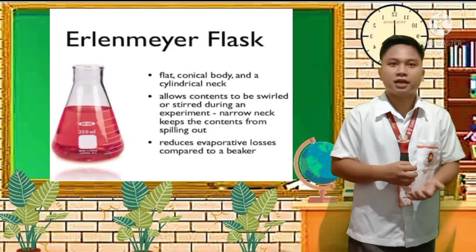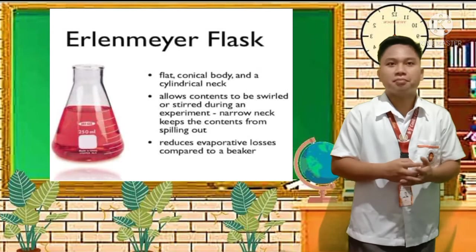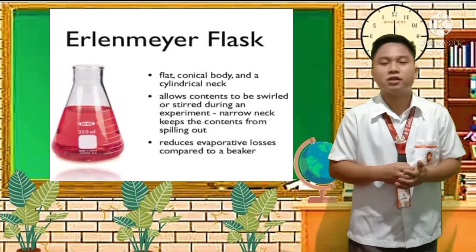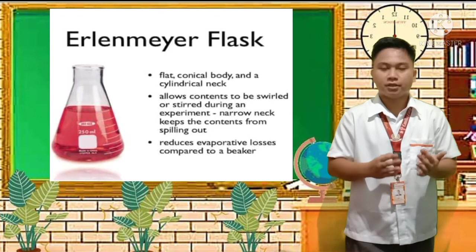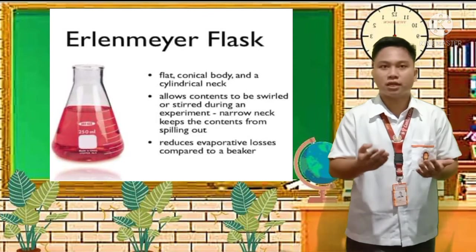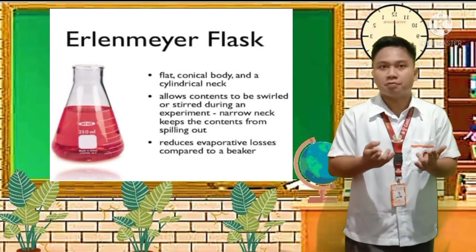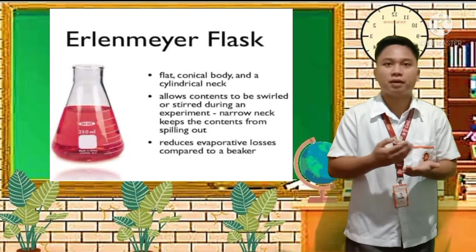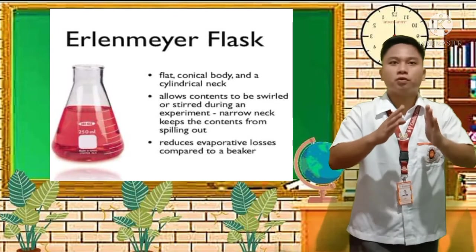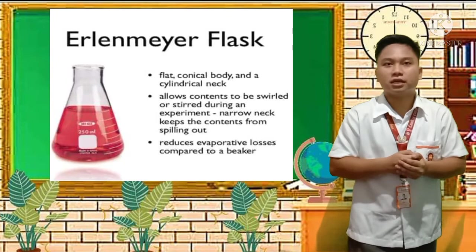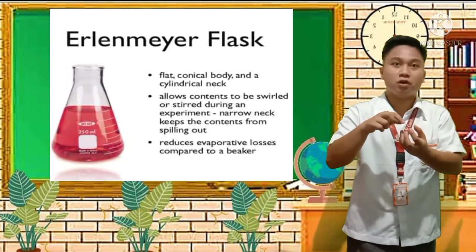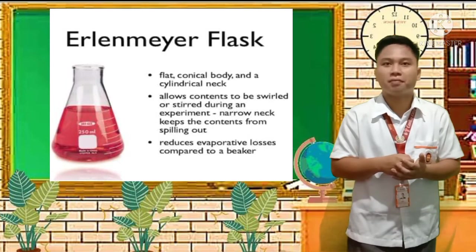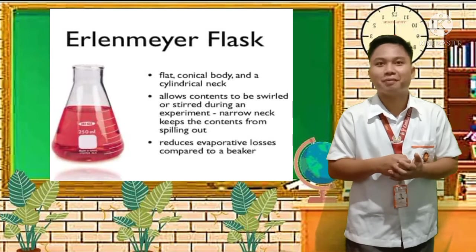As you can see in the picture on the left side, the Erlenmeyer flask has a flat conical body and a cylindrical neck. The body is flat at the bottom with a curve, and same as the beaker, the bottom is flat so it won't tip over. The difference is that the neck narrows — it becomes a cylindrical neck — because it allows the contents to be swirled or stirred during an experiment.